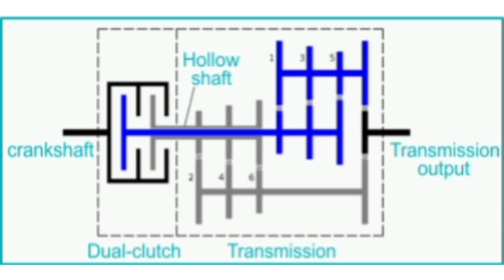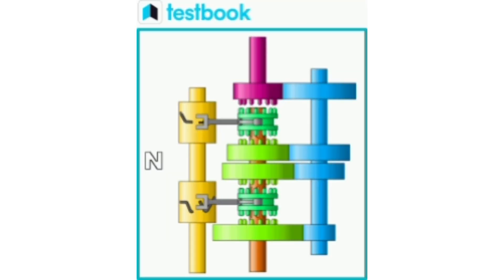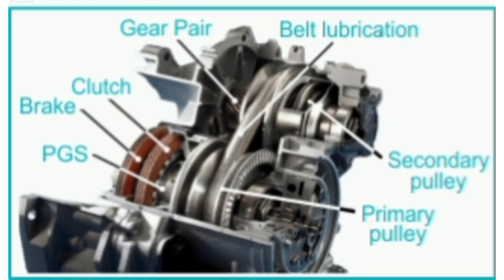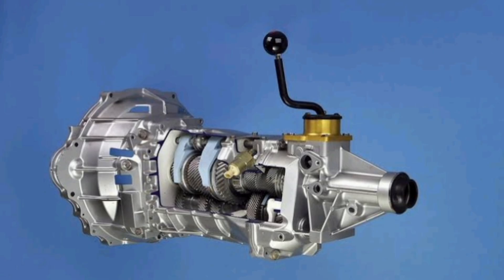The types of transmission systems include: manual transmission, automatic transmission, semi-automatic transmission, dual clutch transmission, sequential transmission, and continuously variable transmission.